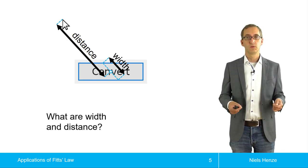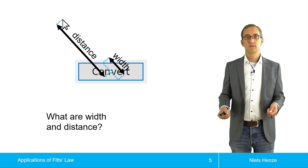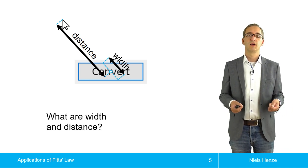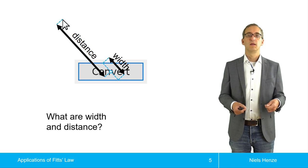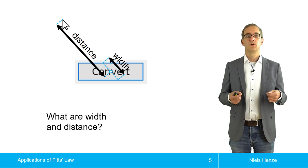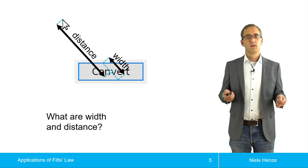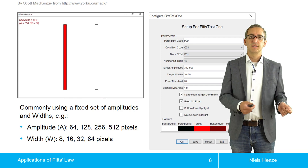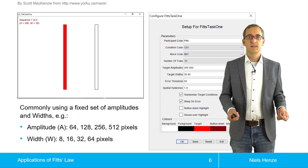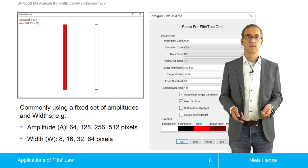So if you want to predict how long it takes to select a button using Fitts' law, we cannot only take the size and the distance into account — we have to consider where the mouse pointer is beforehand in order to figure out the actual size of the button. We still need the constants A and B that form part of Fitts' law.